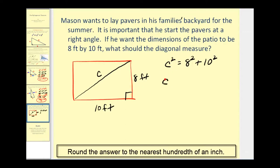So we'd have C squared equals 64 plus 100. C squared equals 164. Now we can square root both sides of the equation. C is going to be approximately the square root of 164.